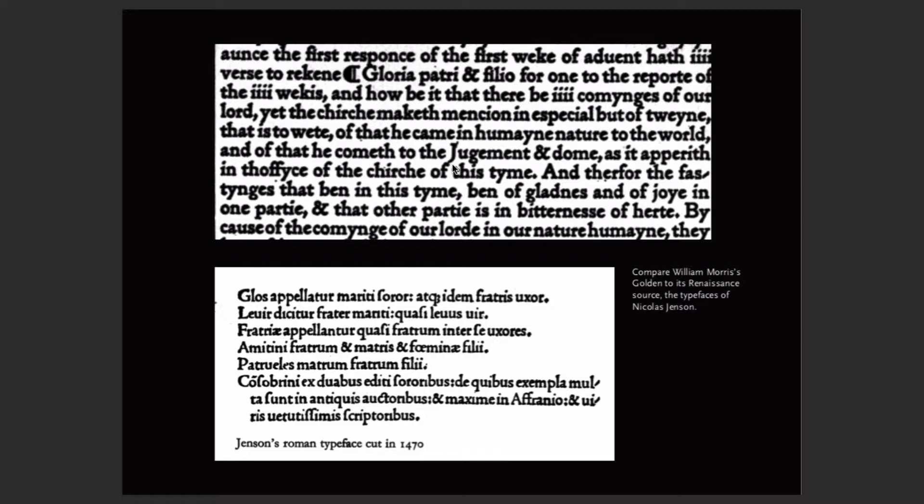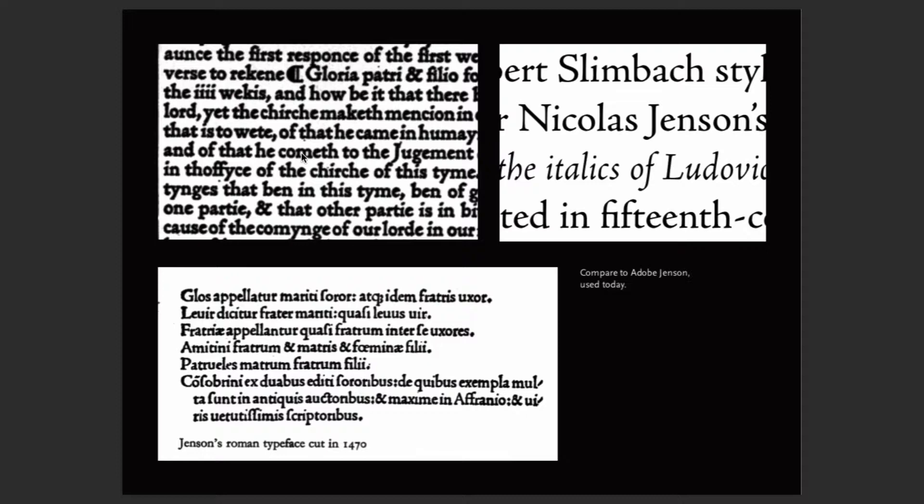William Morris was a British designer who was a big proponent of handmade work, typography, and book design in particular — making books by hand, wallpaper, and decoration. Comparing Jensen in 1470, Morris in the late 1800s, and today, you can see we're moving towards modernism.